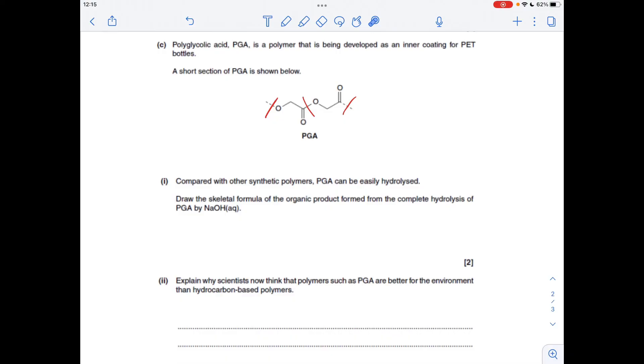So when hydrolysis occurs, we think about what's going to happen to each part. This bit here is going to turn into an alcohol group and ordinarily this bit here, the C=O bond would turn into a carboxylic acid group.